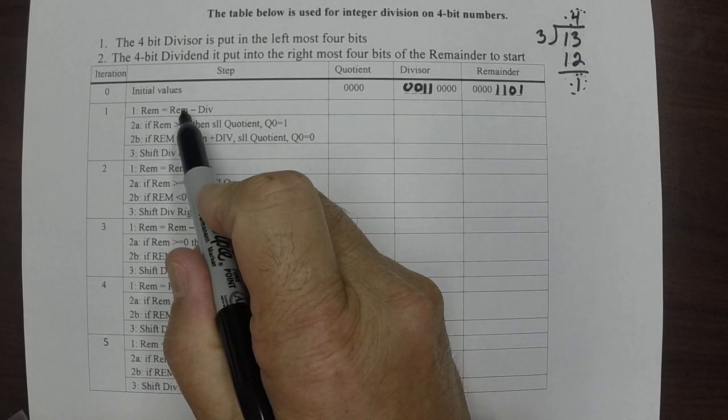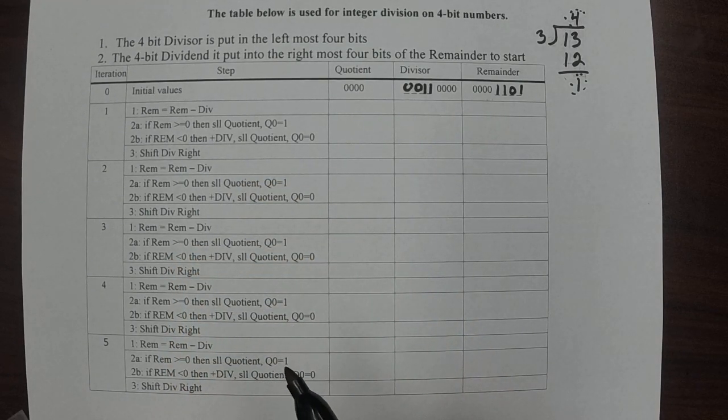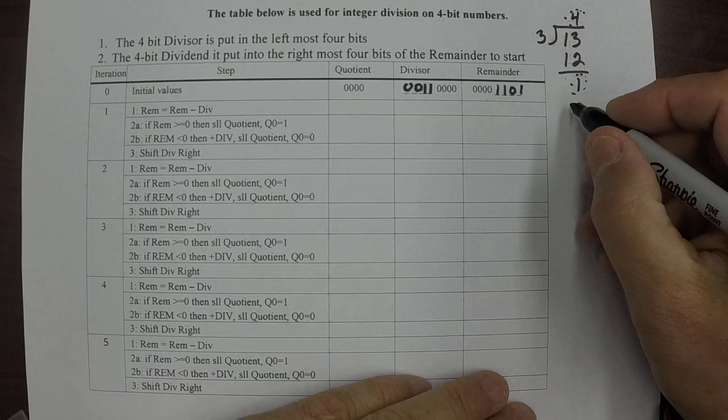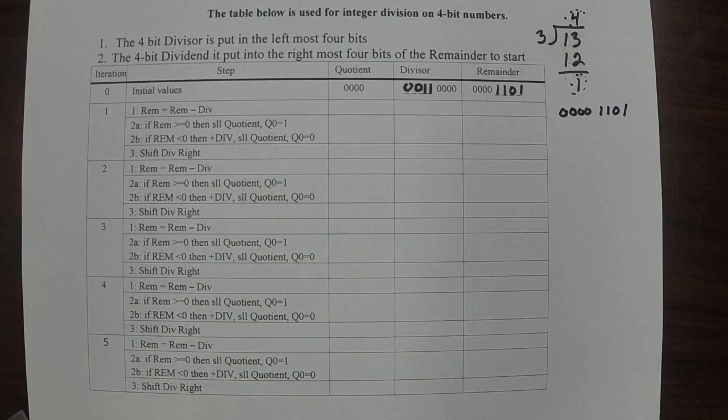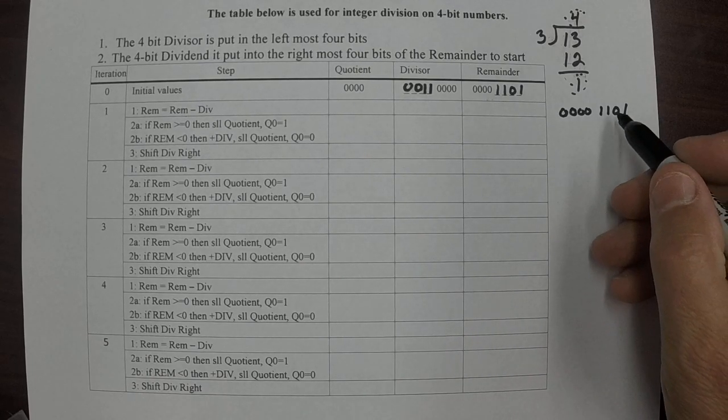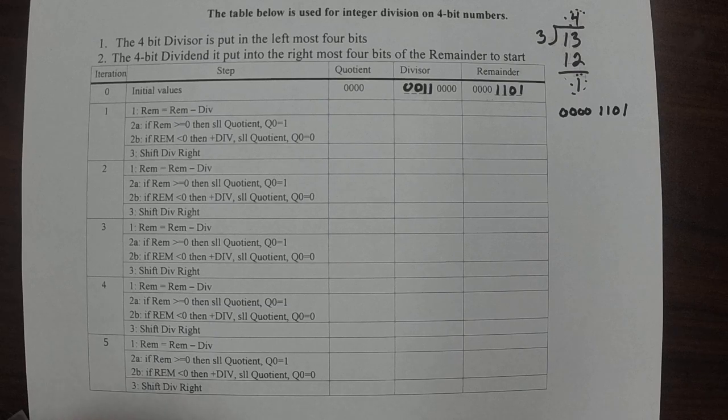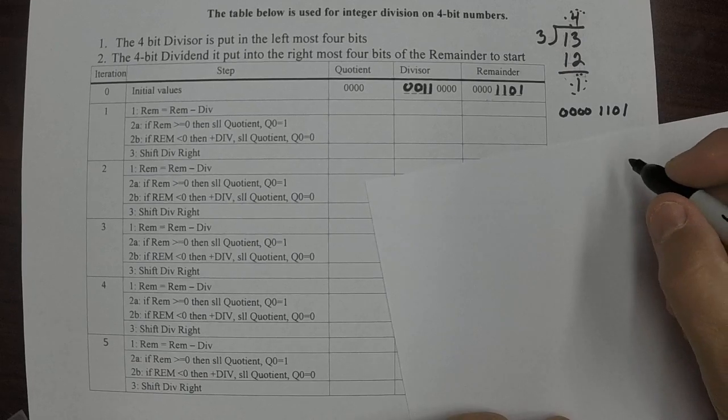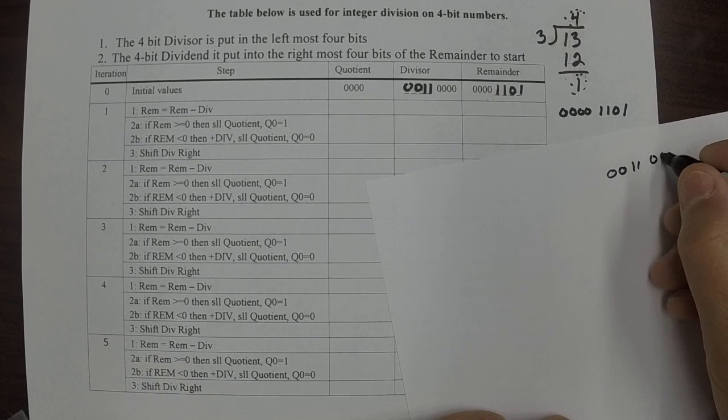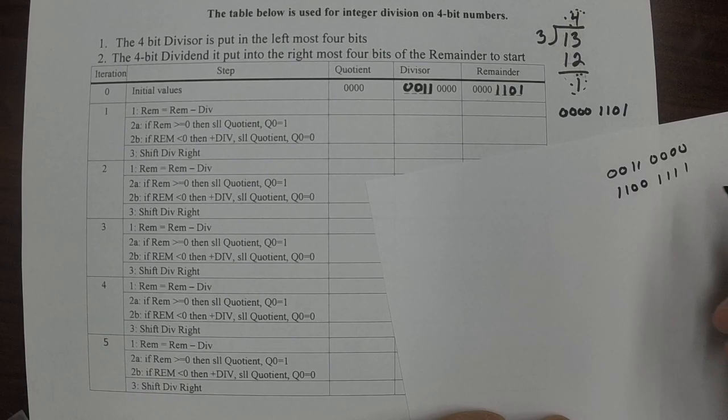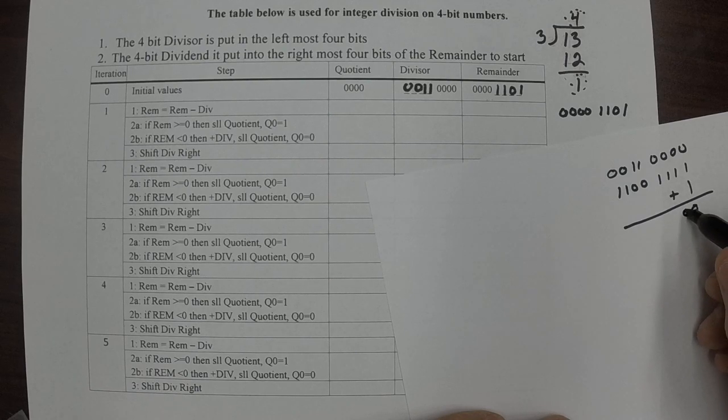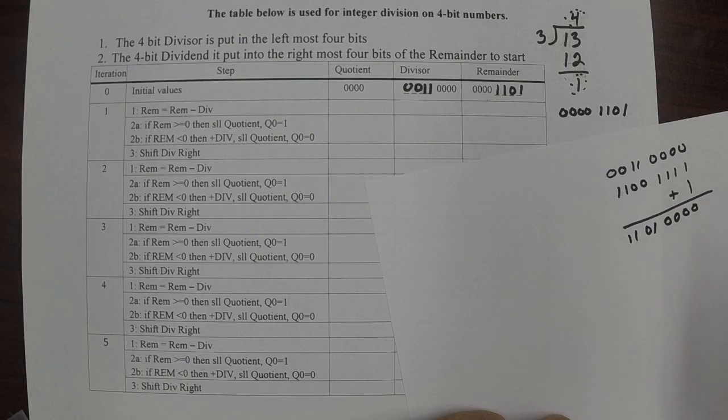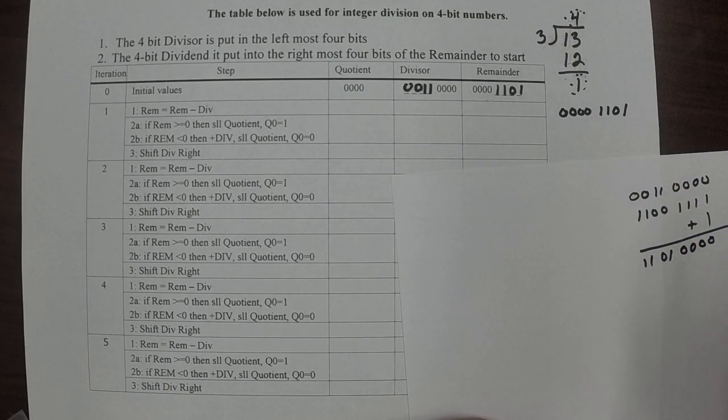The first step is we take the remainder and subtract the divisor from it. That involves taking the remainder and then taking the divisor and doing two's complement on it and adding that to the remainder. Let me put a sheet over here. We're going to take the divisor, do two's complement, which is to reverse all the bits and then add one. I know this is just going to be all zeros and then one will come right there.